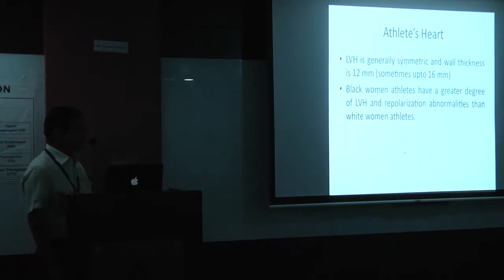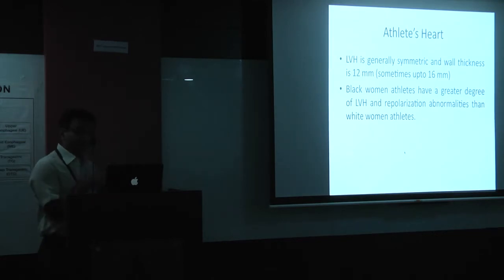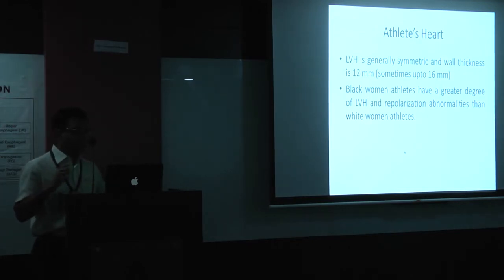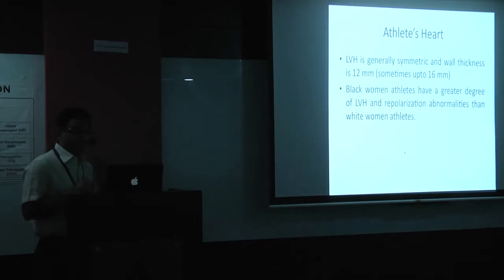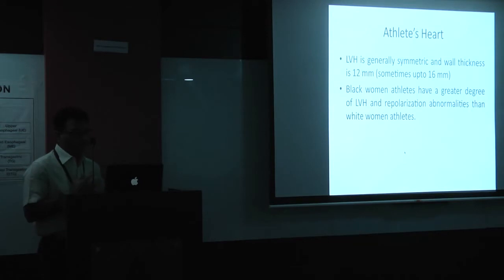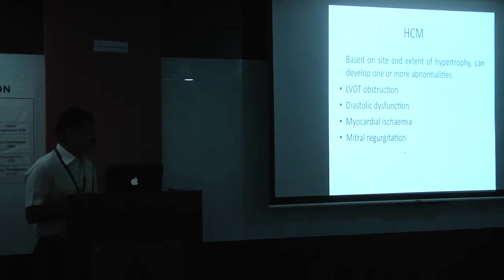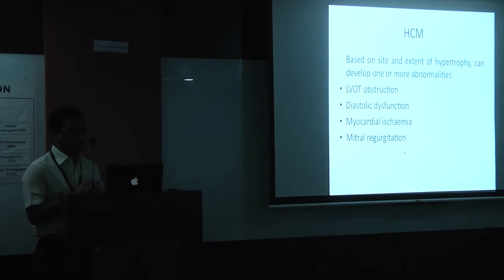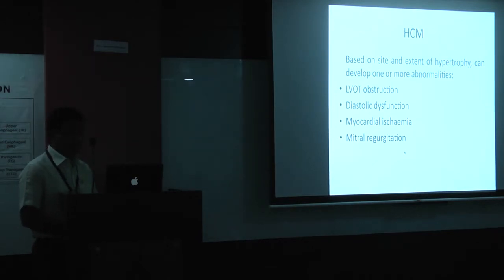To differentiate from athlete's heart, LVH in athletes is generally symmetric and wall thickness is generally about 12, up to 16 mm. Black women athletes have a greater degree of LVH and repolarization abnormalities than white women. In HCM, based on the site and extent of hypertrophy, one can develop LVOT obstruction, diastolic dysfunction, myocardial ischemia — patients can present with even chest pain — and mitral regurgitation.